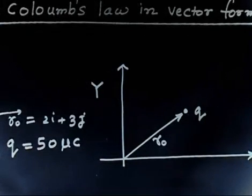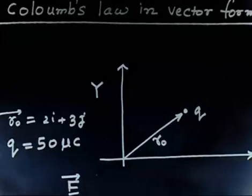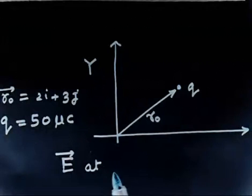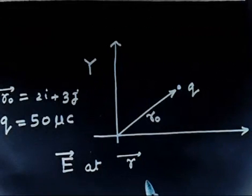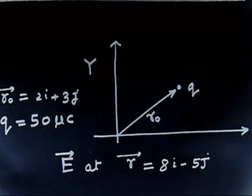Where i and j are unit vectors along x and y-axis respectively. Find the vector of electrostatic field strength E and its magnitude at point. So I have to find electric field. And this I have to find at vector r. And r is given by 8i minus 5j.